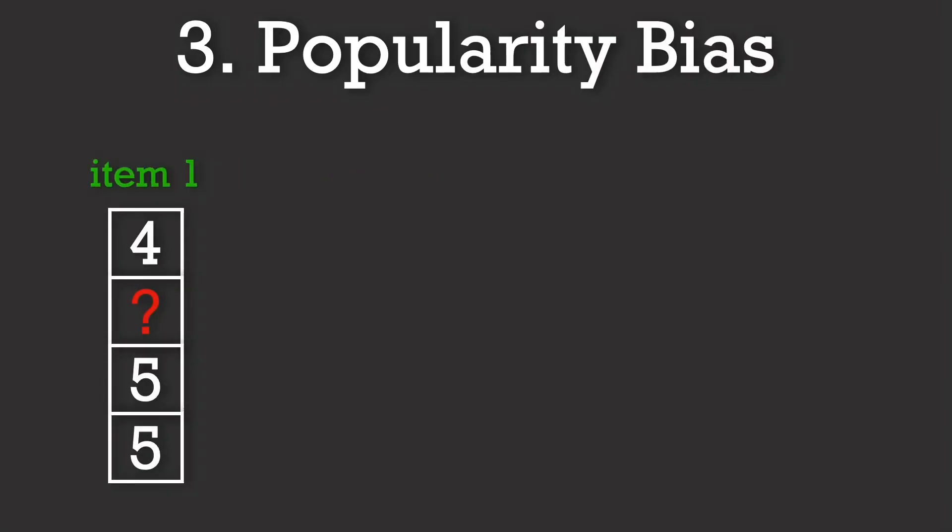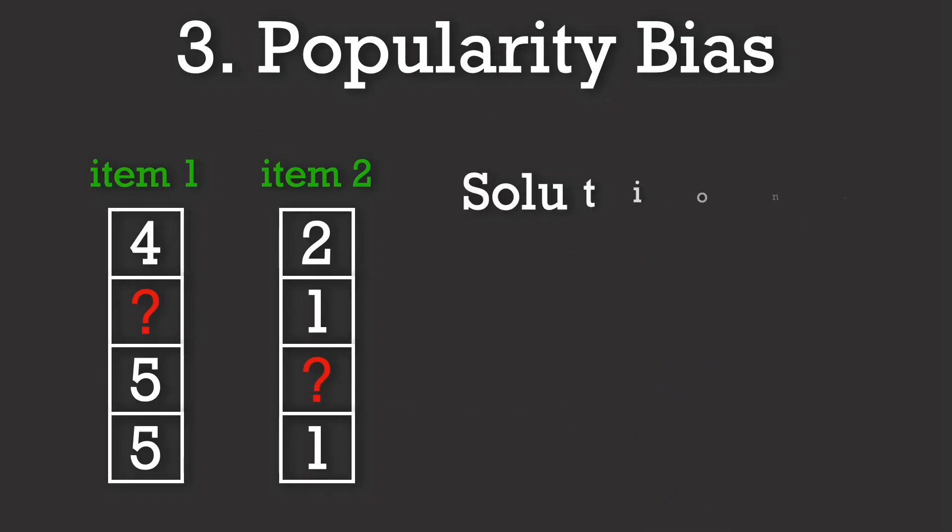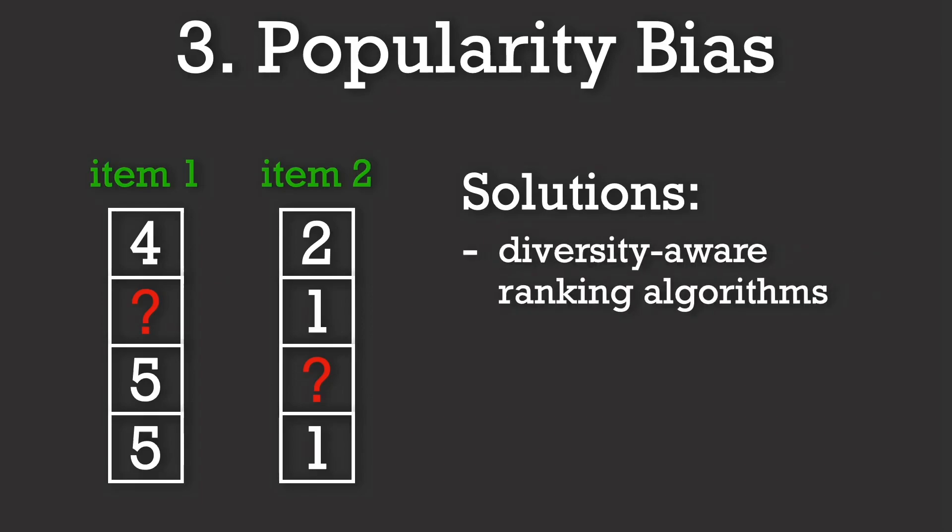Next, let's talk about biases. User behavior data is often skewed by population bias, where popular books get more visibility, and therefore more ratings, making them even more popular. One solution is to incorporate diversity-aware ranking algorithms that adjust for popularity and promote less exposed items.